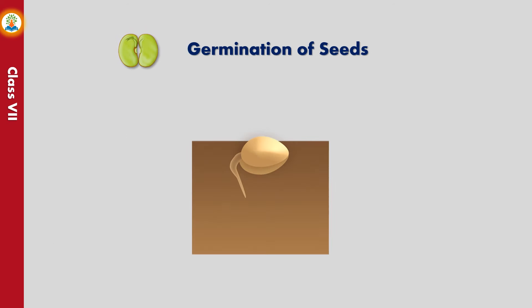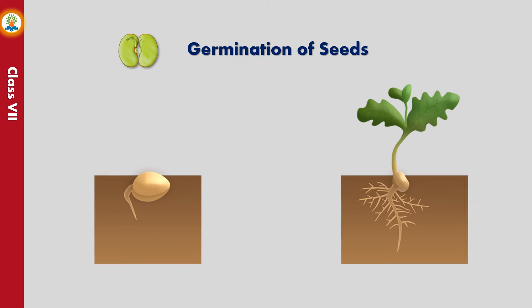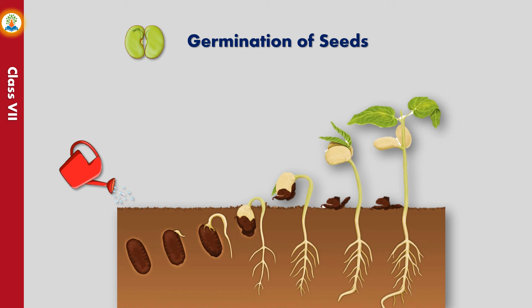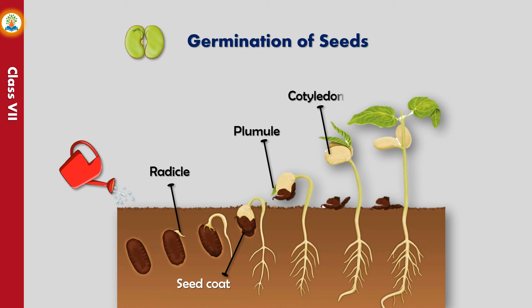Germination is the process of growth of a plant from its seed. Once the seeds are scattered, they need certain conditions to germinate: proper amount of moisture, air, temperature, and soil. When these conditions are optimum, the seeds germinate into a baby plant by using the food stored in them. The process of germination starts with the intake of water by the seed. This water activates the enzymes present in the seed; enzymes convert the stored food into a soluble form. The soluble food is utilized by the radicle and plumule for growth. First the radicle grows into the root, then the plumule pushes itself up and forms the shoot system. Once the baby plant starts growing, it makes its own food by photosynthesis.